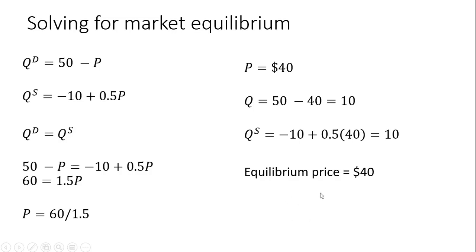So to sum up, the equilibrium price in this market is $40, and the equilibrium quantity is 10 units.